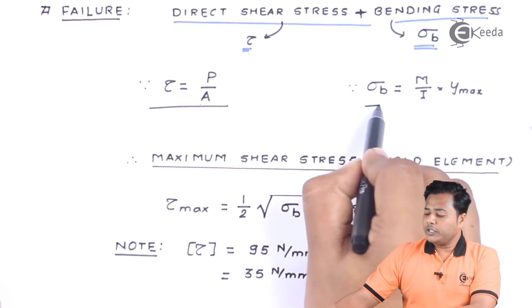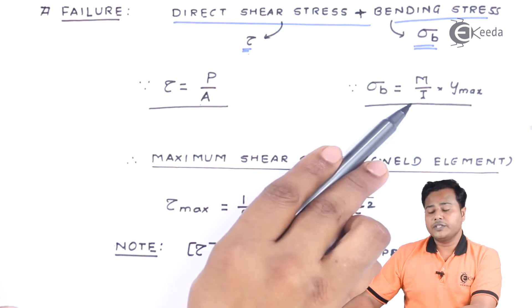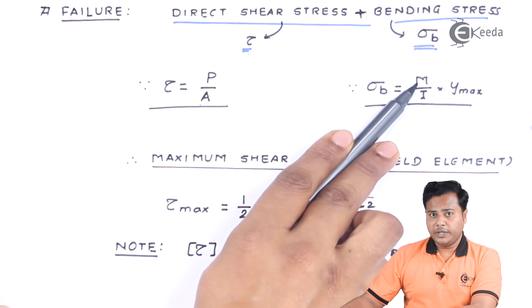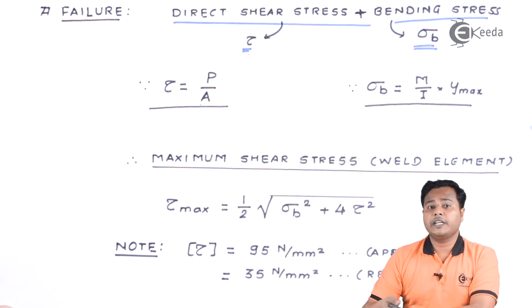Whereas this particular parameter sigma bending, which is bending stress, will be given by the bending equations. As usual it is the bending moment. This is nothing but moment of inertia about which the bending is taking place.